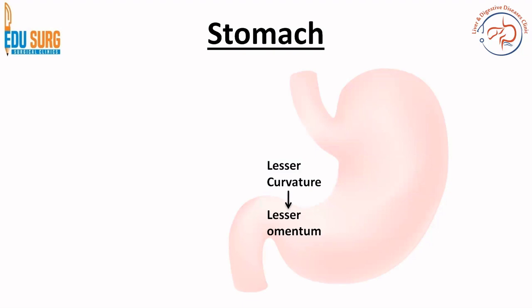So just the very basics: we know stomach has two curvatures, the lesser curvature and the greater curvature. The greater one is on the outer side, lesser curve is on the inside. The lesser curvature gives attachment to the lesser omentum and greater curvature gives attachment to the greater omentum.